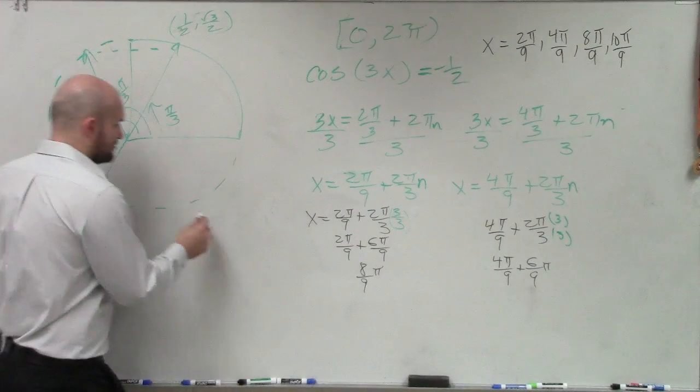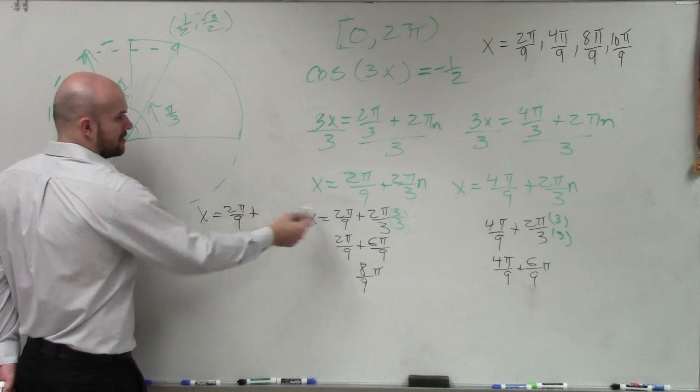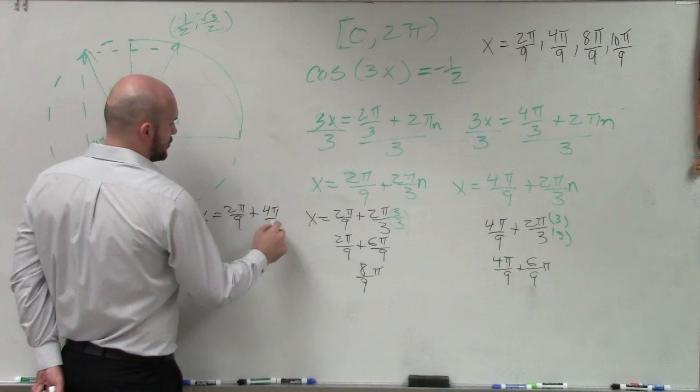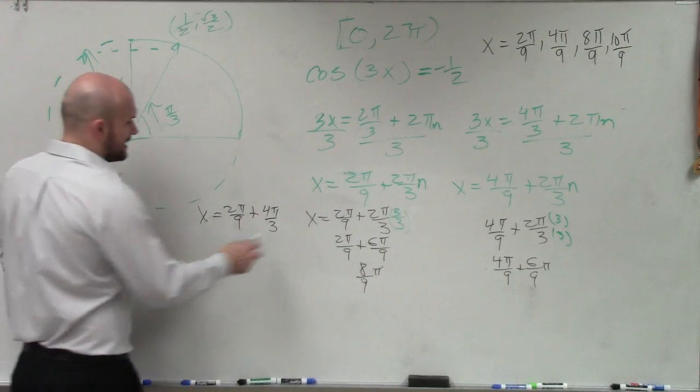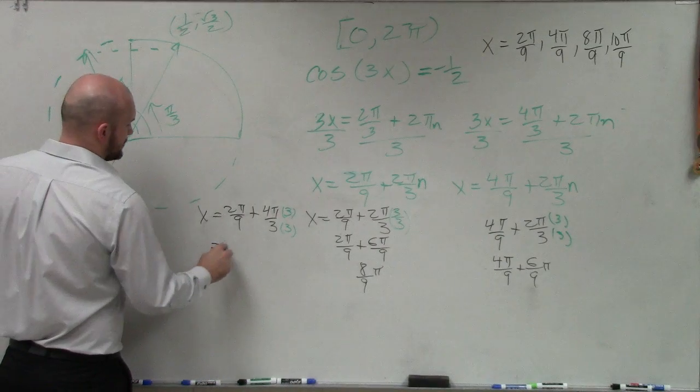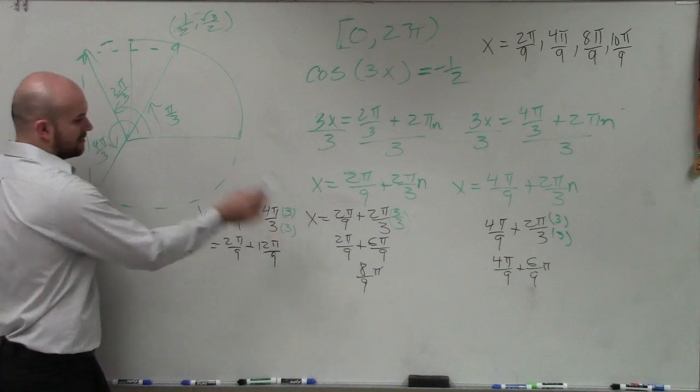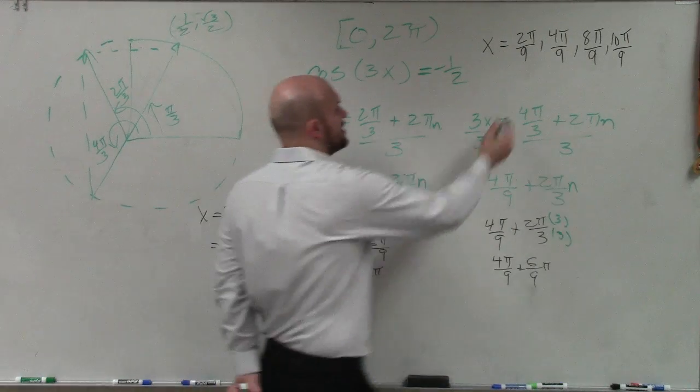So now, what about if n equals 2? So now, if it equals 2, that's 4π over 3. So then again, we multiply by 3. So equals 2π over 9 plus 12π over 9. And that equals what? 14π over 9?